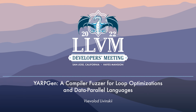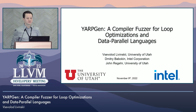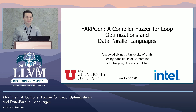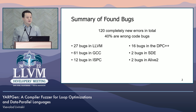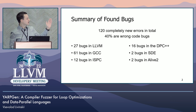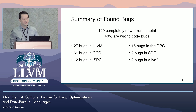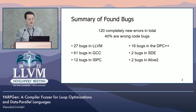Hello, my name is Vseel Plavinsky. I'm a PhD student at the University of Utah. Today I'm going to talk about YARP Gen, a compiler fuzzer for loop optimizations and data parallel languages. It was developed by me, Dmitry Baboki, and John Regier. Using it, we were able to find 120 bugs in LLVM, GCC, ISPC, DPC++, SDE, and Alive2. 40% of those bugs are miscompilations, and they are unrelated to the bugs that we reported in our OOPSLA 2020 paper.